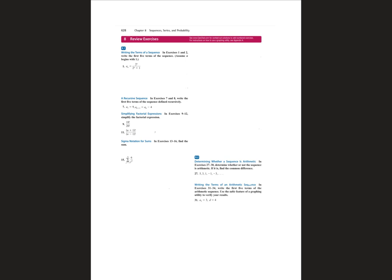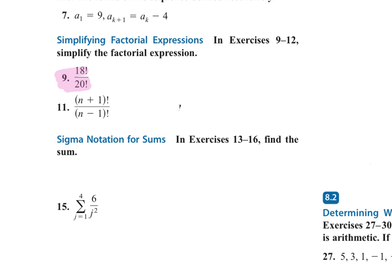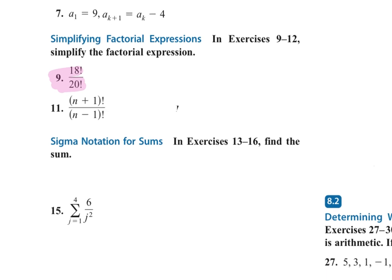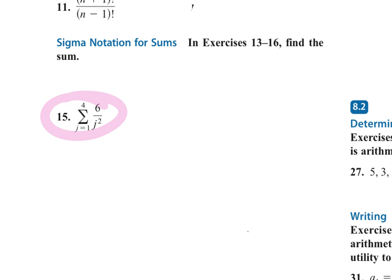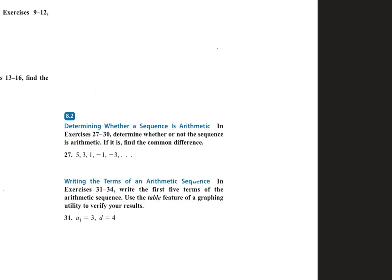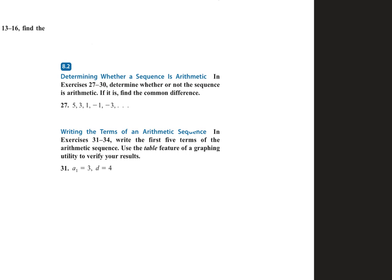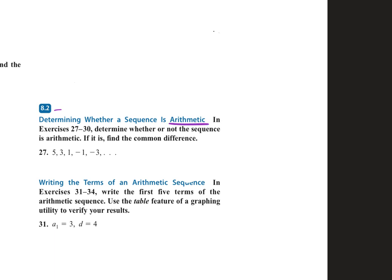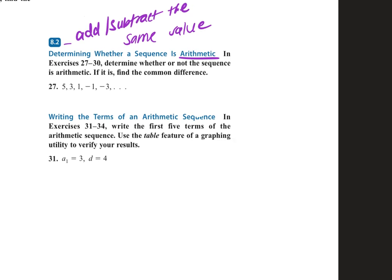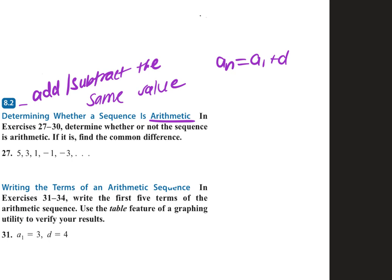Chapter 8 started with sequences and series — arithmetic and geometric. This is where factorials came in: 18 factorial means 18 times 17, and you keep multiplying down. For something like a fraction of factorials, take the bigger one, break it down until you get the smaller one, and simplify. An arithmetic sequence means you're adding or subtracting the same value each time. The formula for arithmetic is A1 plus D times (N minus 1). The partial sum of an arithmetic sequence is N over 2 times (first plus last). None of these are on the reference sheet — you need to know them.